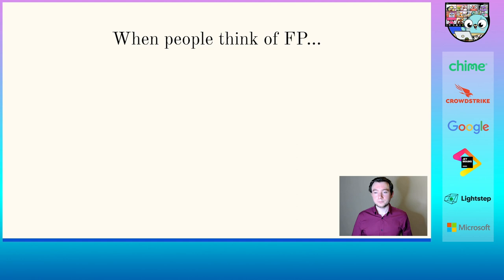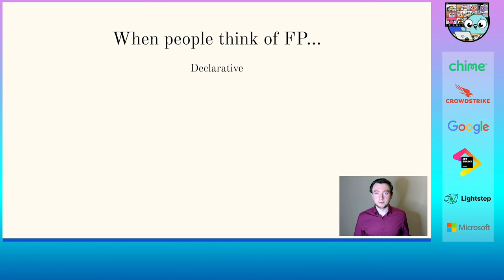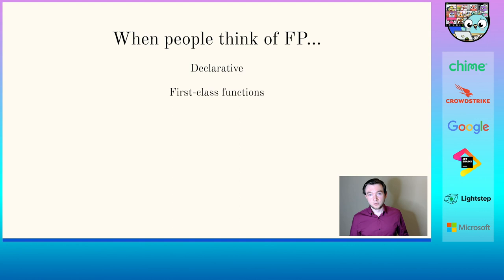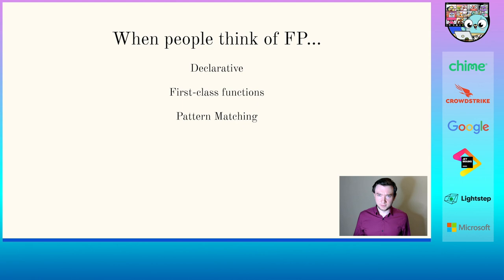When people think of functional programming, there are a few things that tend to come to mind. First, they might think of the declarative nature of functional languages — you say what you want from a function but not exactly how. You have first-class functions, which are kind of in the name. They might think of pattern matching if they've used Haskell, and of pure functions, purity, and immutability.